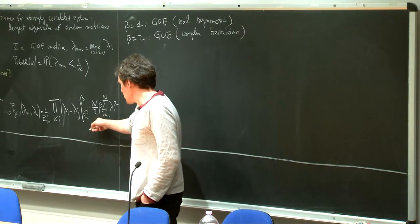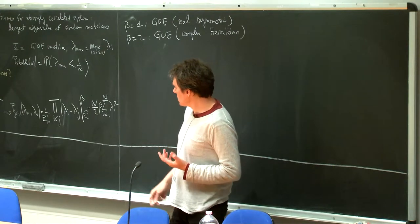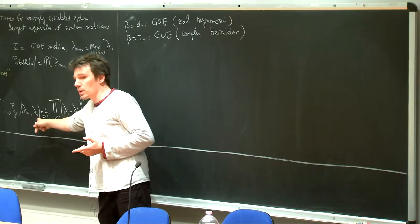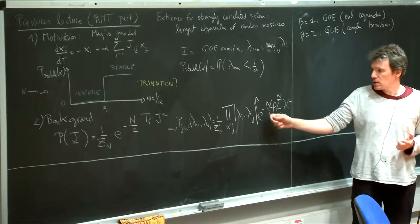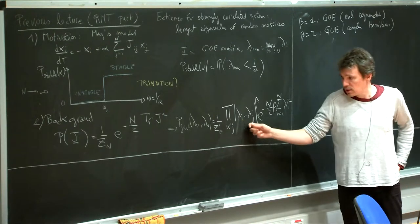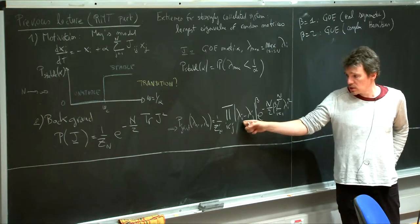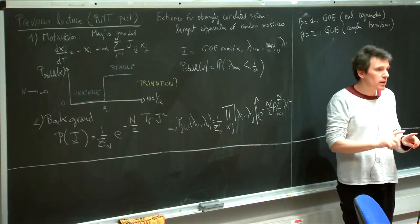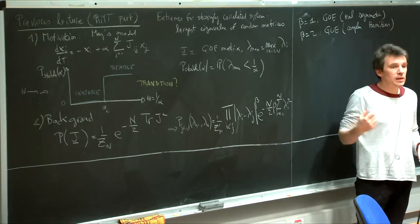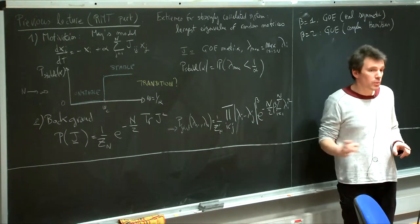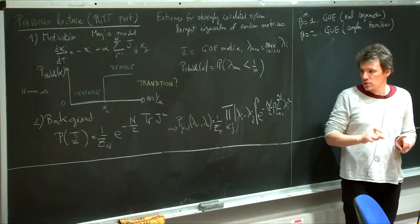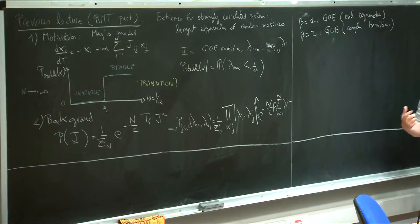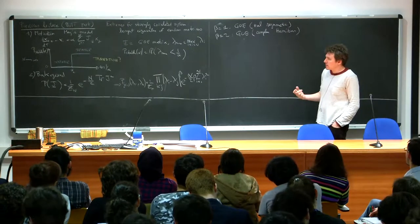Because of the Vandermonde term, there are strong correlations between the lambda_i's. If I had only the product of Gaussians, the eigenvalues would be IID. But because of this term they are interacting: two eigenvalues don't want to sit very close together. If lambda_i is very close to lambda_j, this Vandermonde term will be very small and the probability of such a configuration will be extremely small. This is called level repulsion — the eigenvalues of such random matrices really don't like to sit close by.